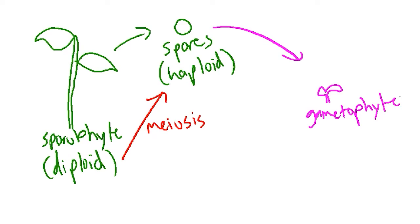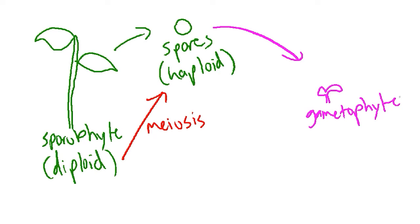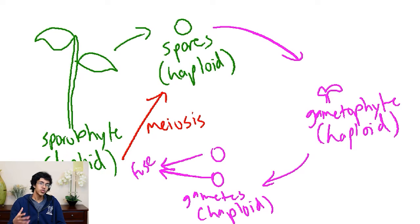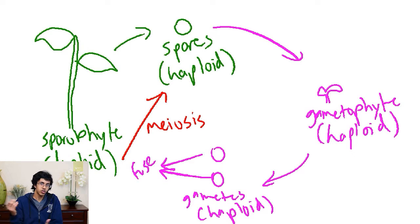The next thing is going to be called gametophytes, and guess what they produce? They produce gametes. In most of the vascular plants we see, gametophytes are pretty small relative to the sporophytes. They're haploid because a spore divides by mitosis to make this new gametophyte. Then this gametophyte produces gametes, which are exactly like human gametes - haploid and combining to produce a zygote, which eventually forms a sporophyte. So sporophytes are diploid, they make spores, which make gametophytes, which make gametes that combine to form diploid stuff.